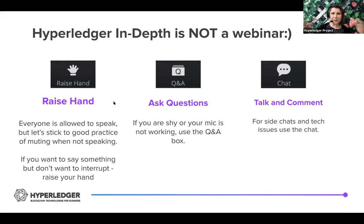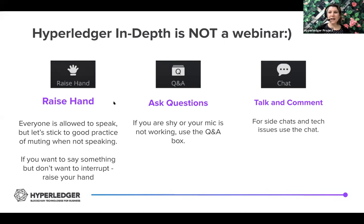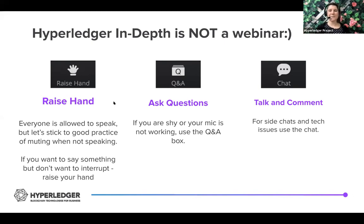If you want to jump in while others are speaking, you can raise your hand using the button on your navigation bar. If your mic is not working or you're shy, ask questions in the Q&A and they will definitely be addressed. If you want to do side chats or have tech issues, use the Q&A box. I will allow everyone to talk, so you can unmute yourself whenever you want — please just keep it polite.